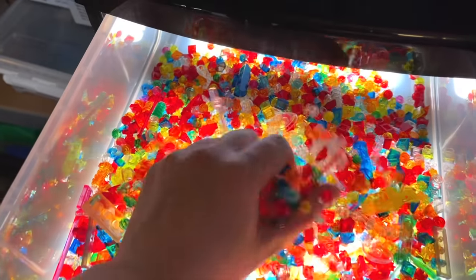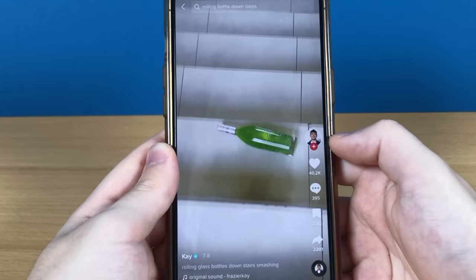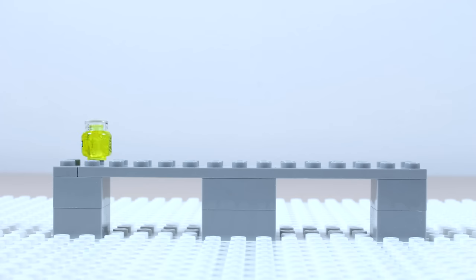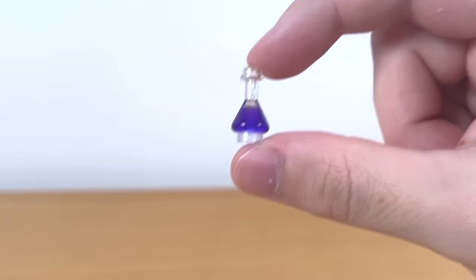For the glass shards, I'll simply use these smaller transparent LEGO pieces with matching colors. Okay, now for the glass rolling down the stairs. I got a bunch of these different bottle pieces, like this LEGO potion.